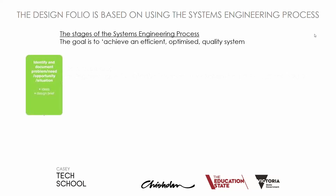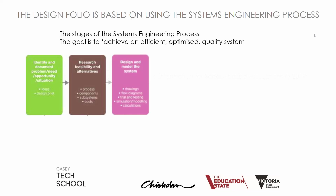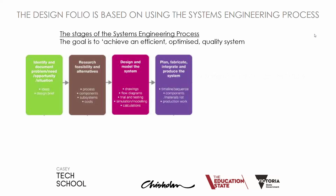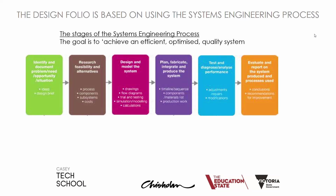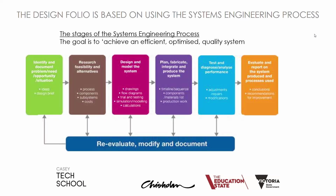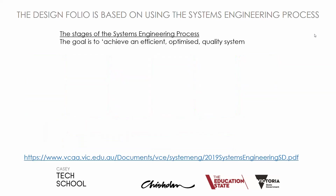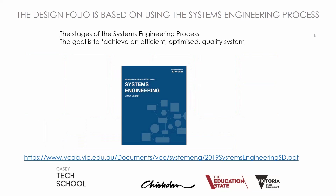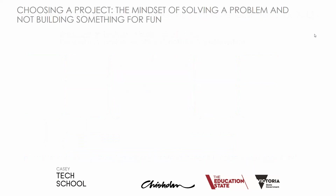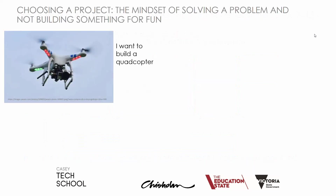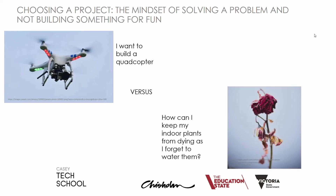It's based on using the systems engineering process, which is outlined in the study design. We need to identify a problem, research some alternative fixes for the problem, design your fix, plan the production, test it once you've built it, and then evaluate it. This is iterative — we keep going back a step if need be. We need to get into a mindset of solving a problem, not having the final product in mind before we start. It's really problem-based.